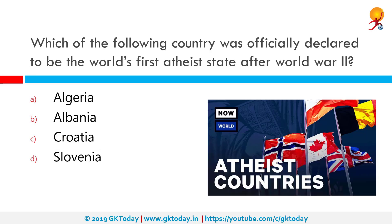Which of the following countries was officially declared the world's first atheist state after World War II? This was Albania. Albania, under Enver Hoxha, became in 1967 the first and to date the only formally declared atheist state, going far beyond what most other countries have attempted.